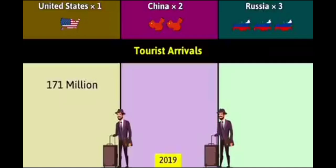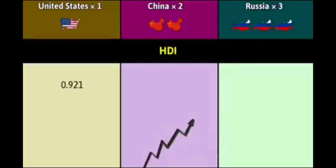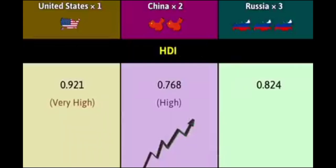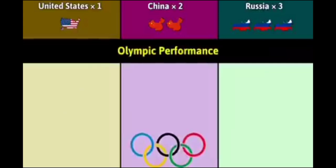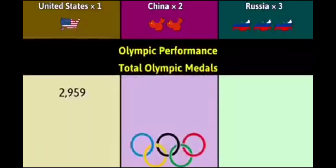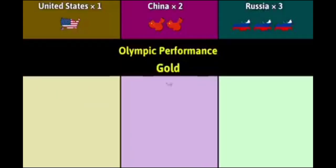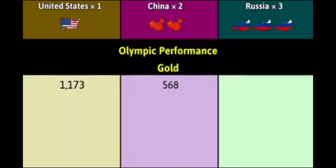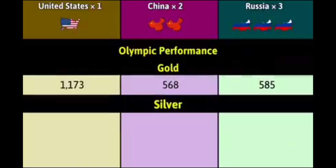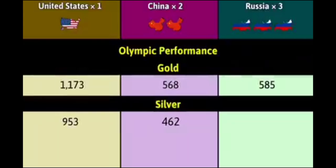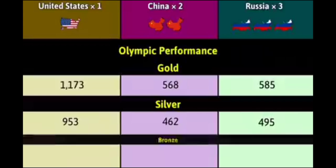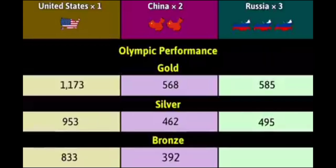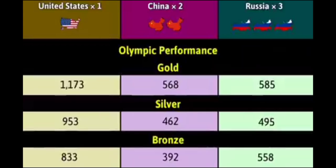Poverty rate: 4%, 4.8%, 4.8%. Hospital beds per 1,000 people: 3.3, 4.3, 8.8. Tourist arrivals per year: 171 million, 280 million, 50 million. HDI: 0.921 very high, 0.768 high, 0.824 very high. Olympic performance — total medals: 2,959, 1,422, 1,638. Gold: 568, 1,173, 585. Silver: 953, 462, 495. Bronze: 833, 392, 558.